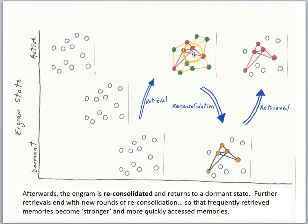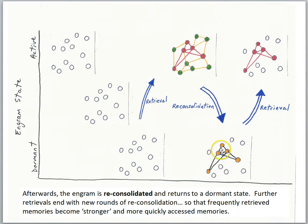After we retrieve the memory, it will be reconsolidated and return to a dormant state. Further retrievals end with new rounds of reconsolidation, so that frequently retrieved memories become stronger and more quickly accessed. Every time we retrieve a memory and reactivate it, the brain can undergo another round of consolidation where the links between the engram cells get even stronger. Multiple acts of retrieval — retrieving, storing, retrieving, storing — will end up strengthening the engram and the memory trace.